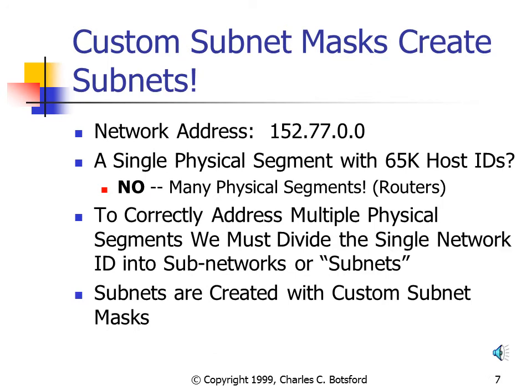The Class B address 152.77.0.0 with the default subnet mask 255.255.0.0 only gives me one network ID, which would require me to use only one physical segment. But in a large network I'll have many physical segments, because whenever I introduce a router I create a new physical segment — defined as all devices on one port of a router, or all devices between two routers. To correctly address those physical segments, I'm going to have to use a custom subnet mask.